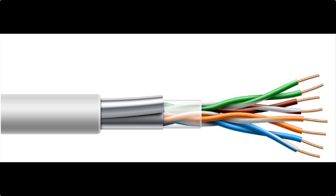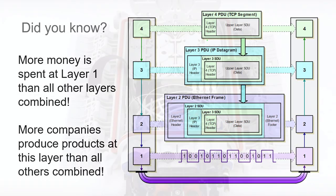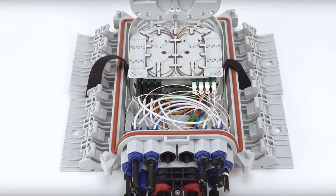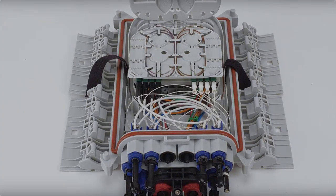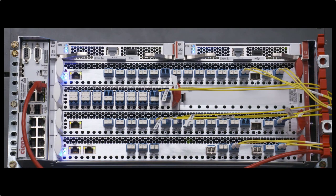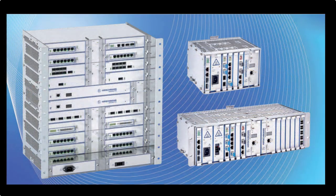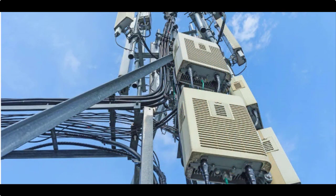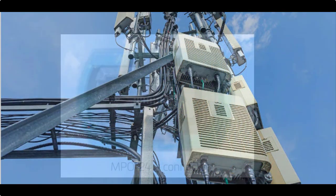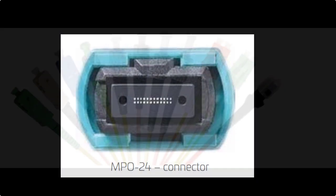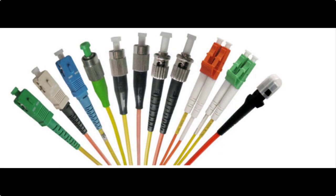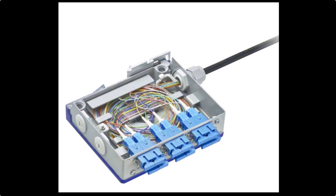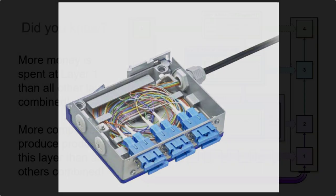More money is spent at layer 1 than all the other layers combined. More companies produce products at this layer than all the other OSI layers combined. Now I'm cheating a little bit because most companies produce products that span at least layer 1 and layer 2 of the OSI layer.